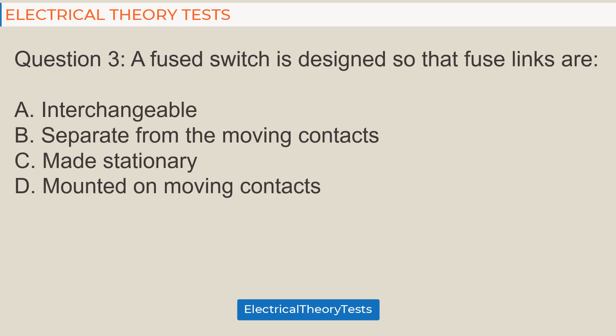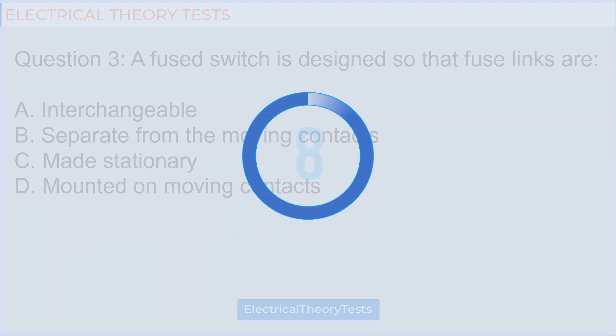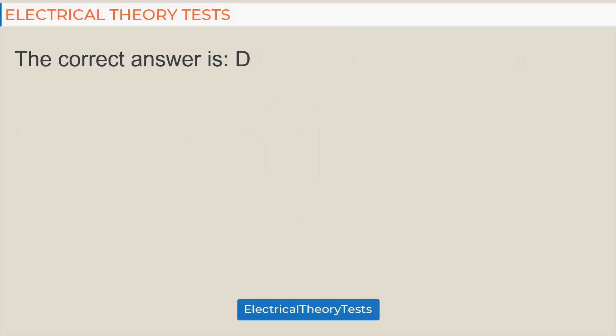Question 3: A fused switch is designed so that fuse links are: A. interchangeable, B. separate from the moving contacts, C. made stationary, D. mounted on moving contacts. The correct answer is D.